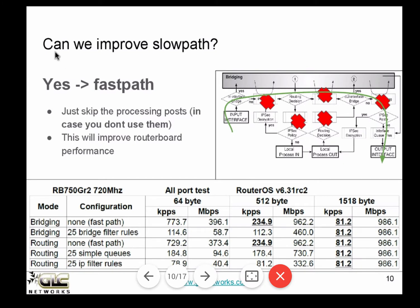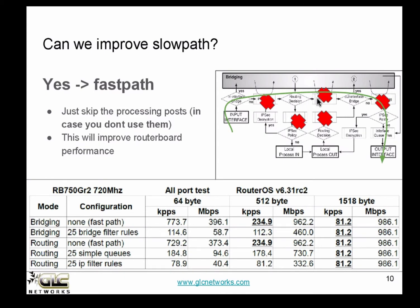So is there any way to improve the slow path? Yes — that's why MikroTik invented FastPath. The idea for FastPath is to skip the processing posts that you don't need. Not every router activates hotspot, not every router needs connection tracking — MikroTik has many features, but most of the time you don't need all of them. So if you don't need them, why process incoming packets through all of them? You can skip pre-routing, skip forward, skip post-routing — and this really, really improves routerboard performance.